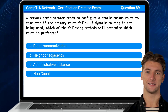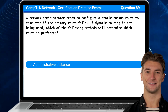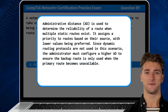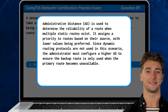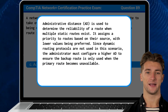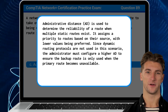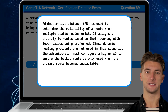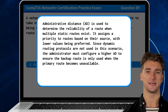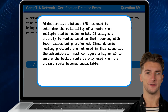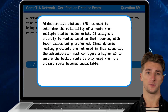The answer is C: administrative distance, or AD for short. Administrative distance is used to determine the reliability of a route when multiple static routes exist. It assigns a priority to routes based on their source, with lower values being preferred. Since dynamic routing protocols are not used in this scenario, the administrator must configure a higher AD to ensure the backup route is only used when the primary route becomes unavailable.